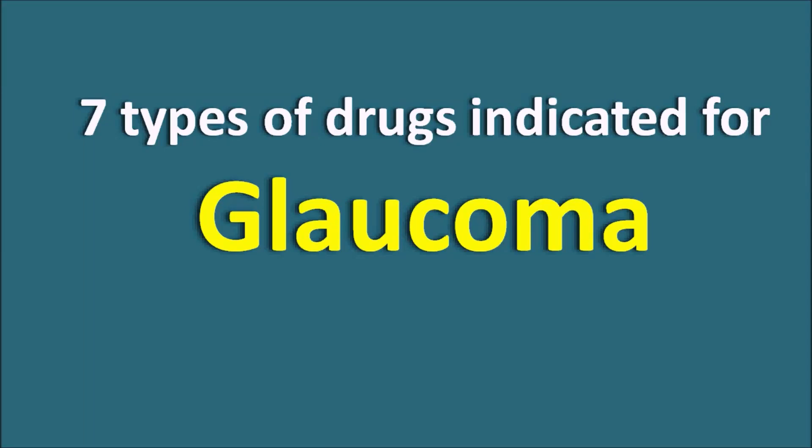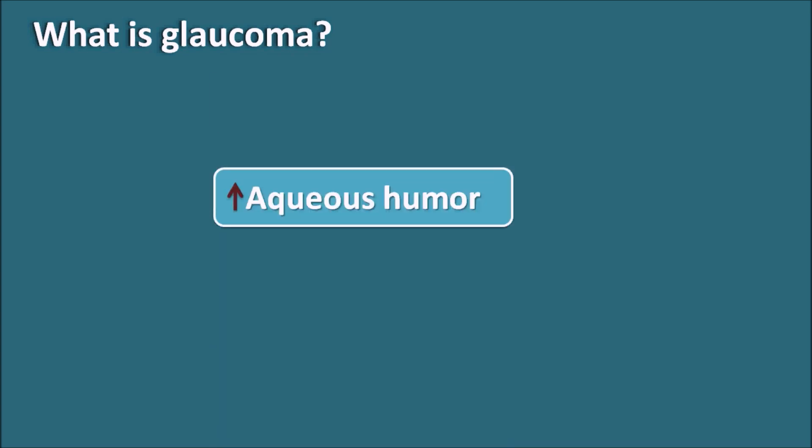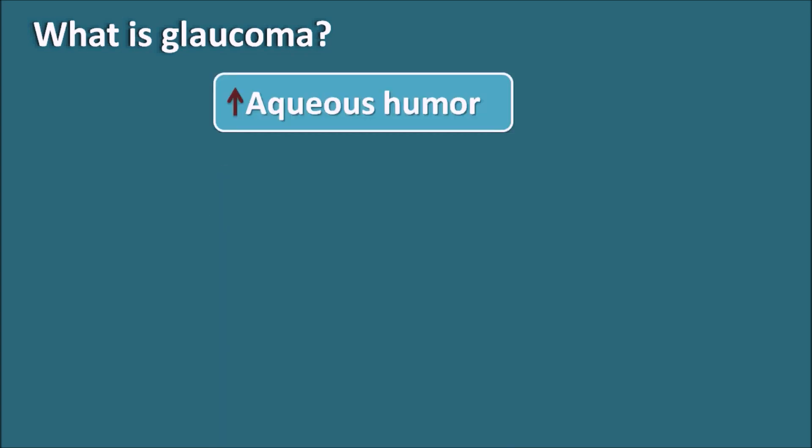7 Types of Drugs Indicated for Glaucoma. What is Glaucoma? Glaucoma is a group of eye disorders which are associated with increased aqueous humor levels within the anterior chamber of the eye.